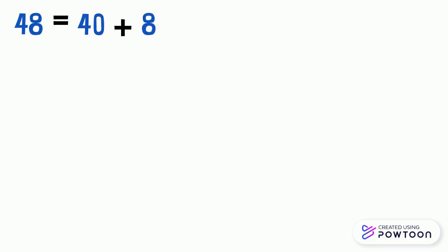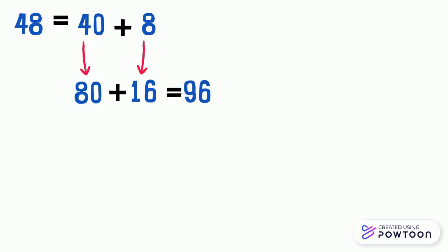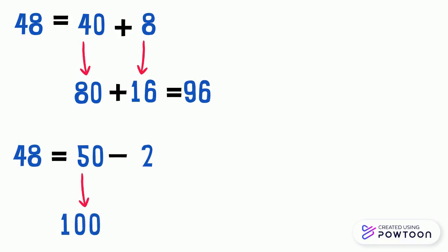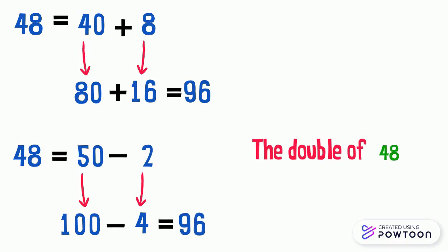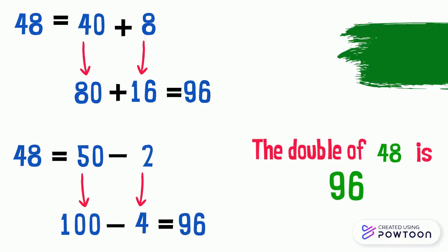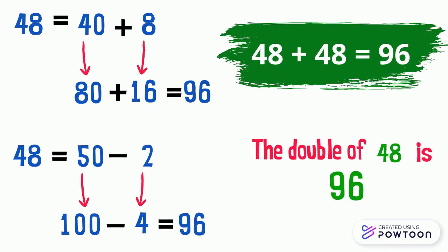The double of 48. 48 equals 40 plus 8. The double of 40 is 80 and the double of 8 is 16. 80 plus 16 equals 96. Also, 48 equals 50 minus 2. The double of 50 is 100 and the double of 2 is 4. 100 minus 4 equals 96. So the double of 48 is 96: 48 plus 48 equals 96.